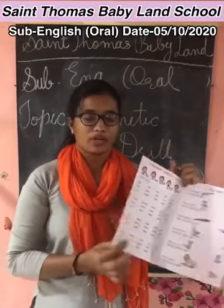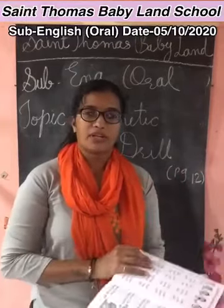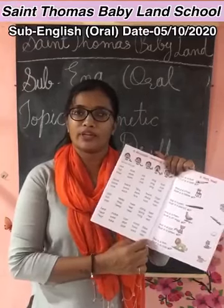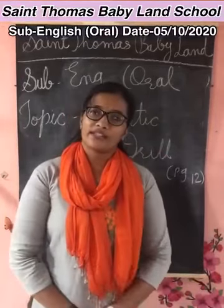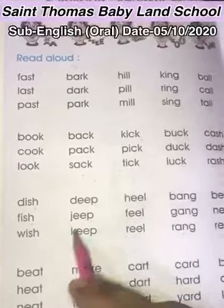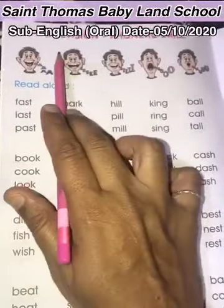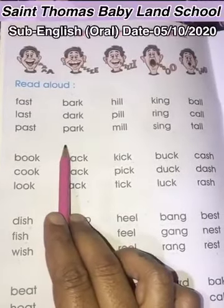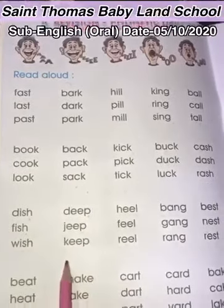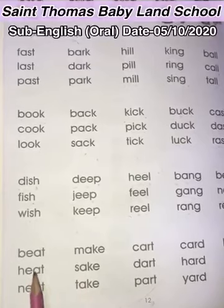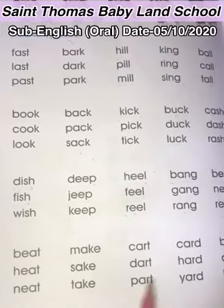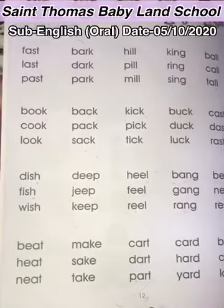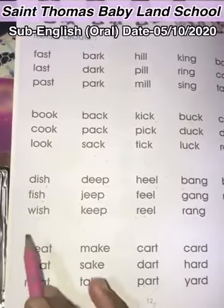So open your book, Primer B, page number 12. Today we are going to read these all words. So now let's start. We continue our topic, Revision, Phonetic Drift. Read aloud. These all words we already completed and today we are going to read these all words.